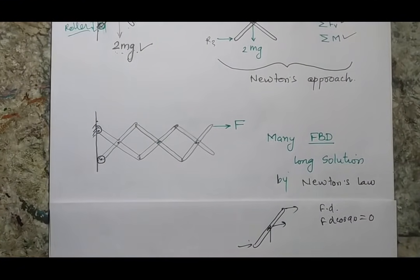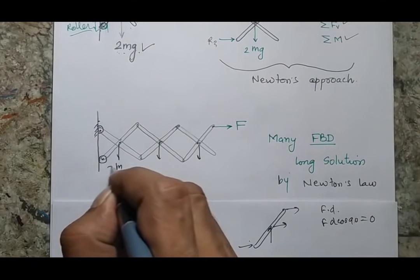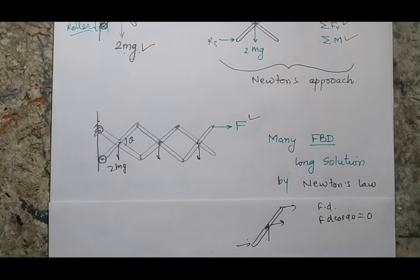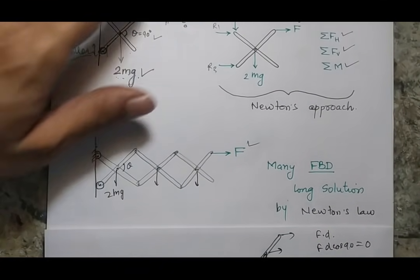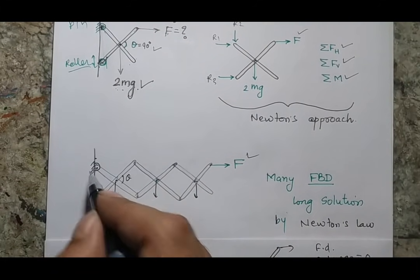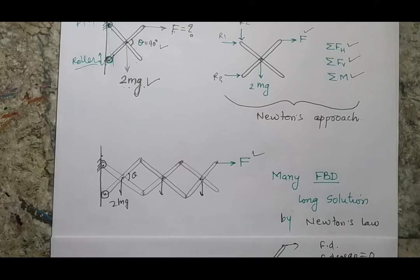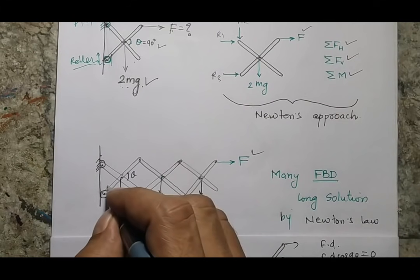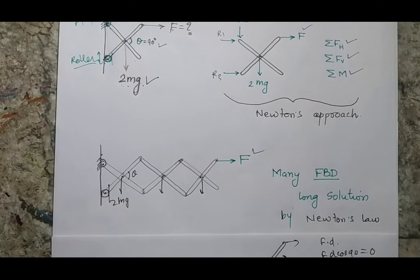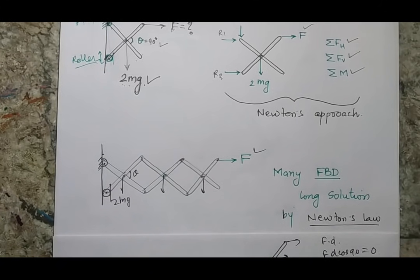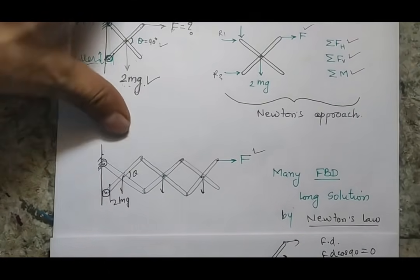Suppose the problem is made more complicated: instead of only two members you have multiple members, with a force applied at one end and many joints each having different forces, requiring you to find the value of theta or the force. Then you must make many free body diagrams and work through them sequentially from one end to the other. Newton's law becomes very cumbersome and lengthy. However, if you apply the principle of virtual work, which is energy-based, the problem becomes very easy. We will see this when we solve the problems.